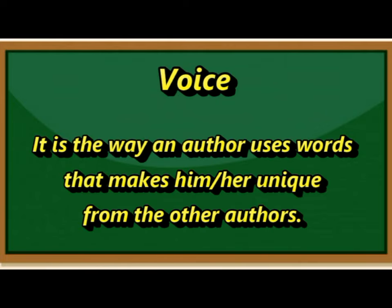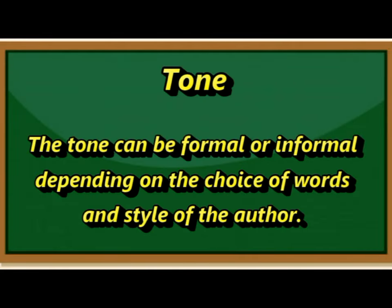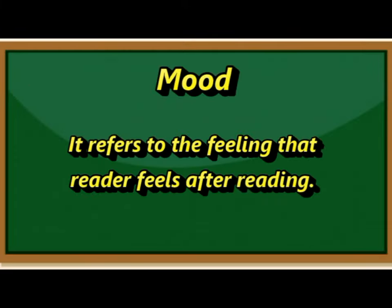Number two, voice — it is the way an author uses words that makes him or her unique from other authors. The personality and outlook of the author is observed through diction and tone. Number three, tone — it can be formal or informal depending on the choice of words and style of the author. Number four, mood — it refers to the feeling that the reader feels after reading.